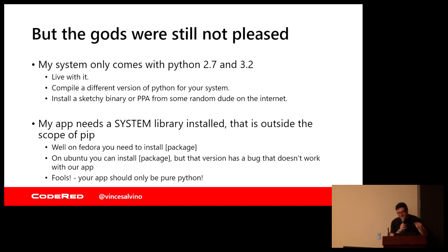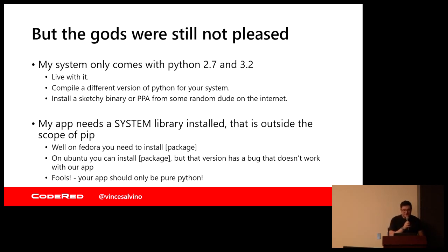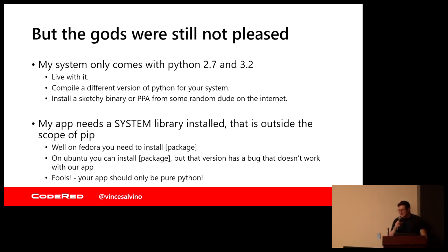But the gods were still not pleased. My system only comes with two versions of Python — one version of Python 2, one version of Python 3. What are my options? Well, I can live with it. I can go on Stack Overflow and try to compile a different version of Python for my system — that will go over great in prod. I could install some kind of binary or a PPA from something I found on the internet. But do I really want to do that just to get Python 3.6?